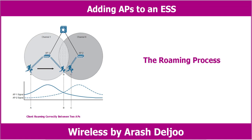The decision to roam is driven by the wireless client driver, not by the AP. Wireless clients decide that it is time to roam based on a variety of conditions. The 802.11 standard does not address this at all, so roaming algorithms are vendor-specific. In addition, the roaming algorithms are usually secret recipes, so the exact thresholds and conditions are hidden from view.